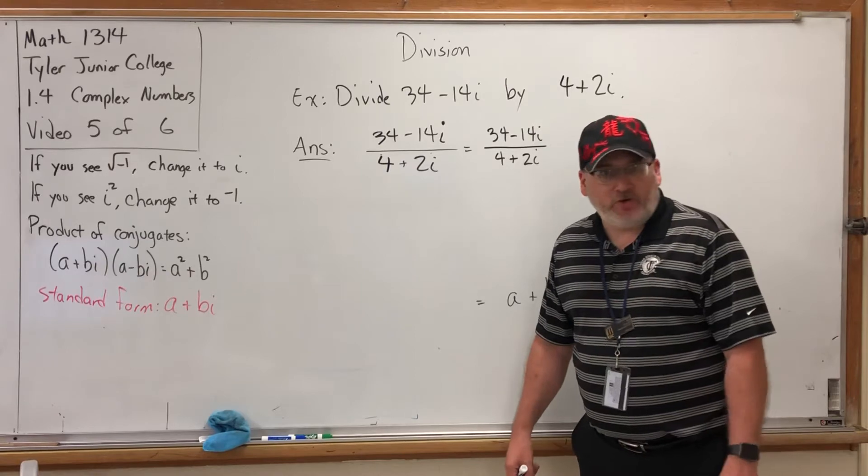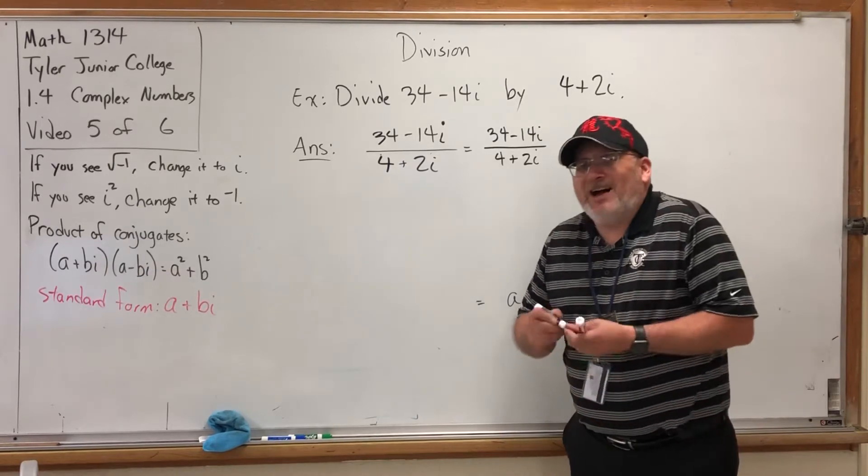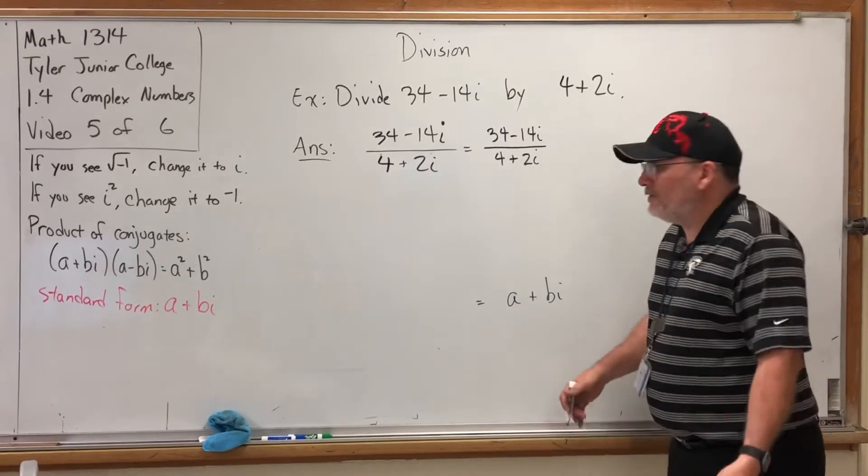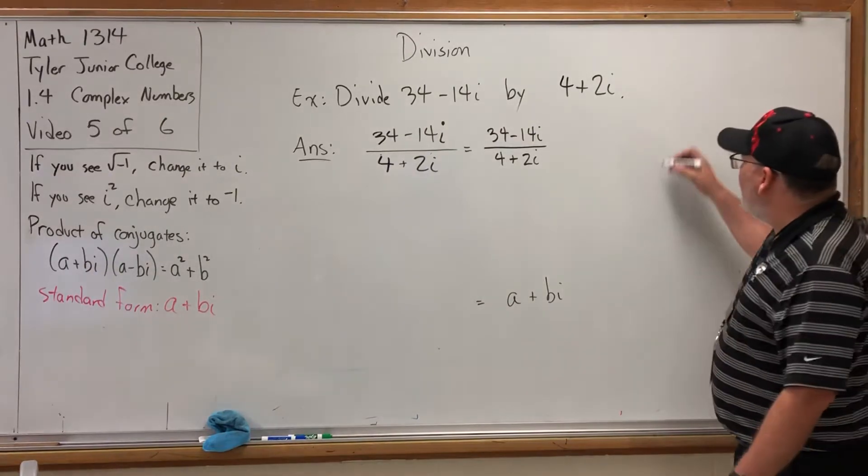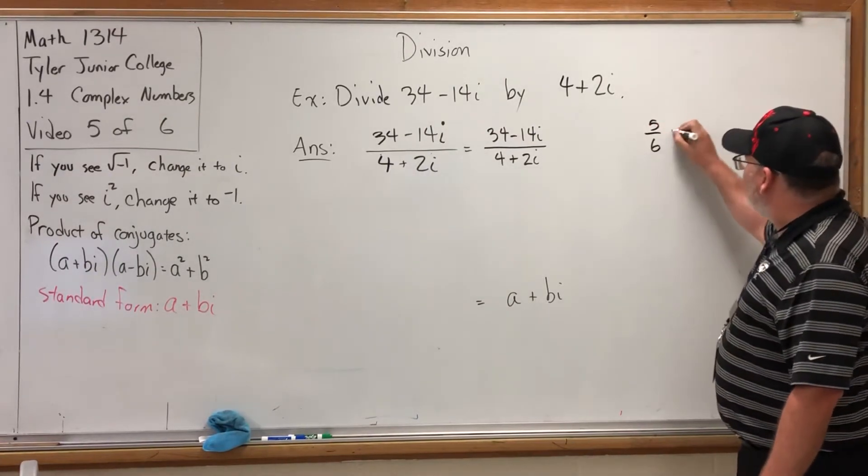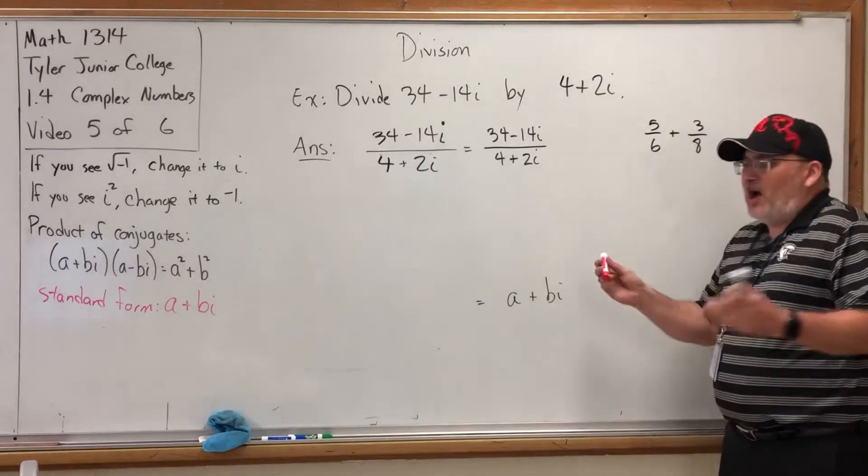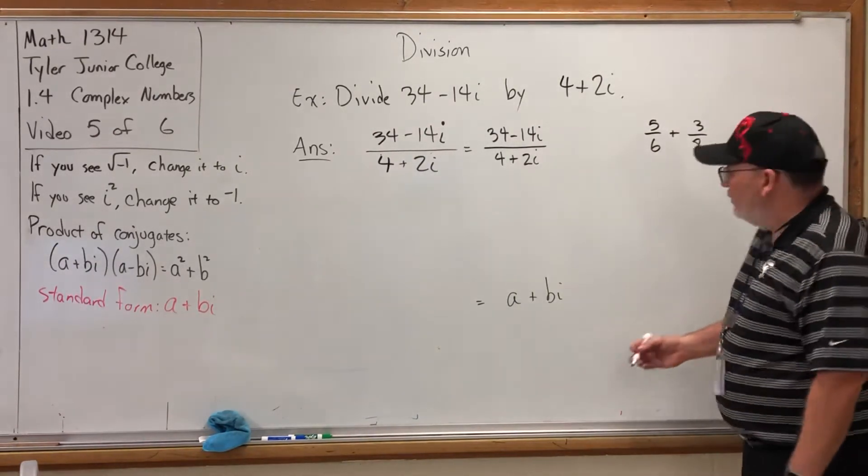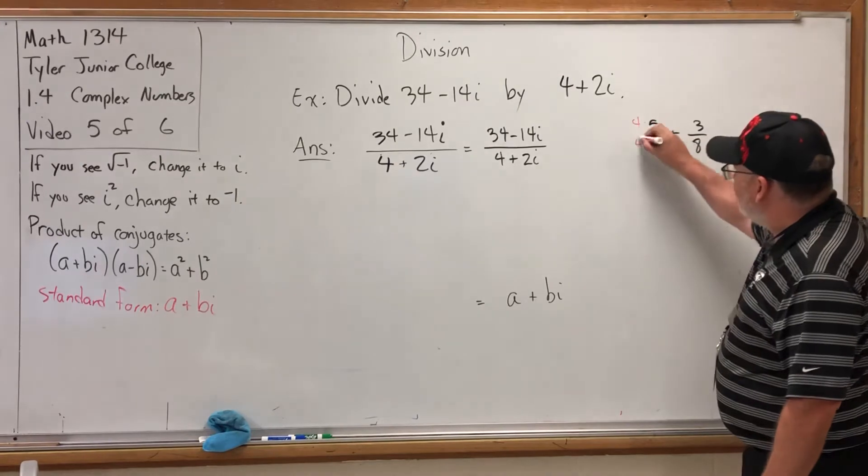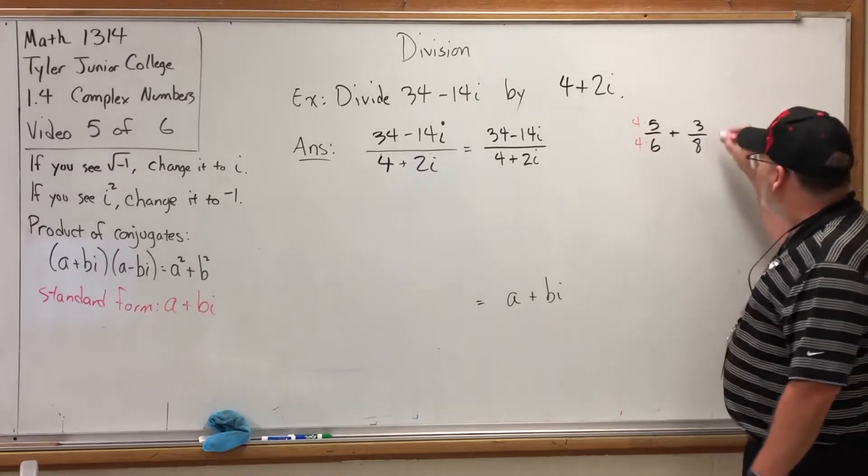You do this all the time when you're getting common denominators, right? For example, if you were adding, I don't know, 5/6 + 3/8, and you said well the common denominator is 24, so I'll multiply both sides of this fraction by 4 to get a 24 and both sides of this fraction by 3 to get a 24. You've done this move before.